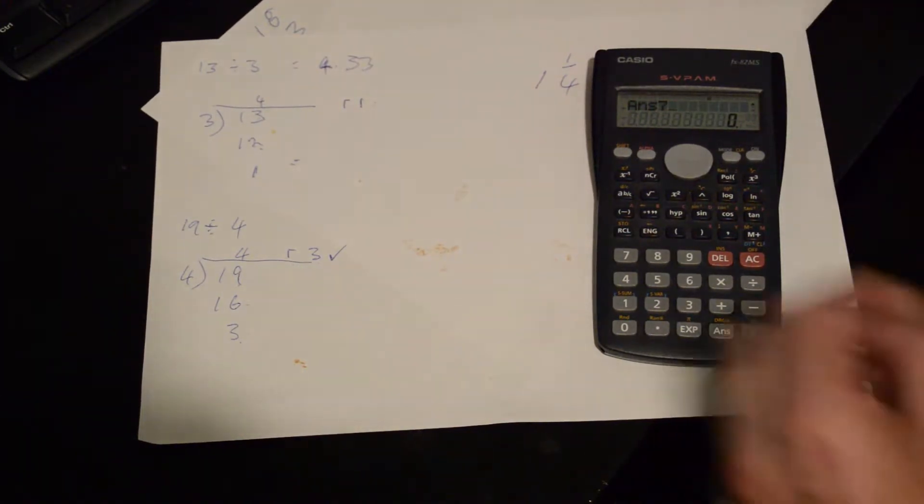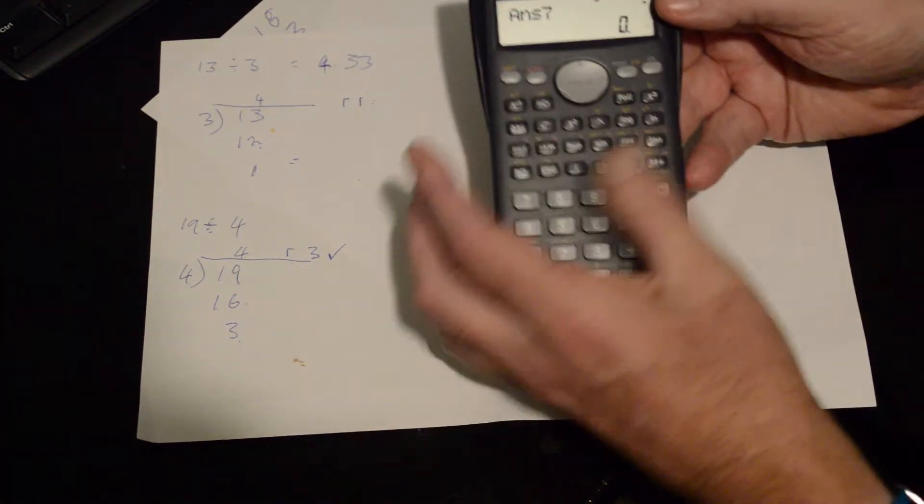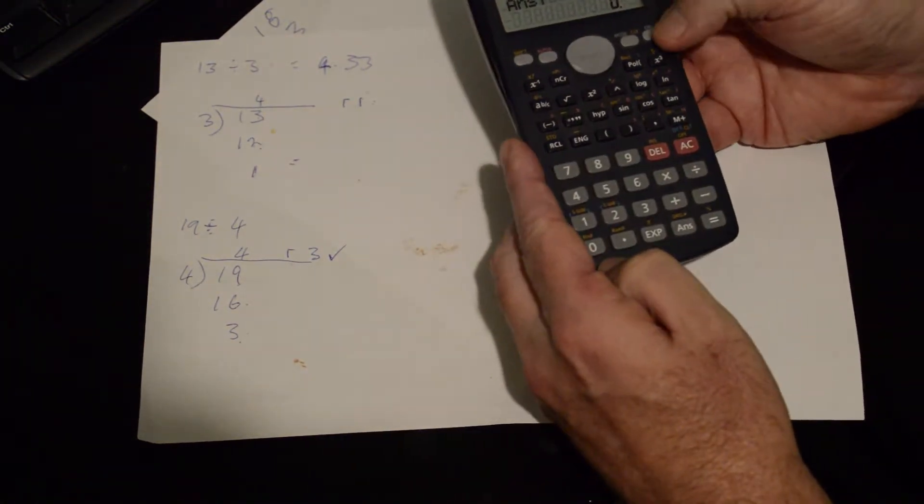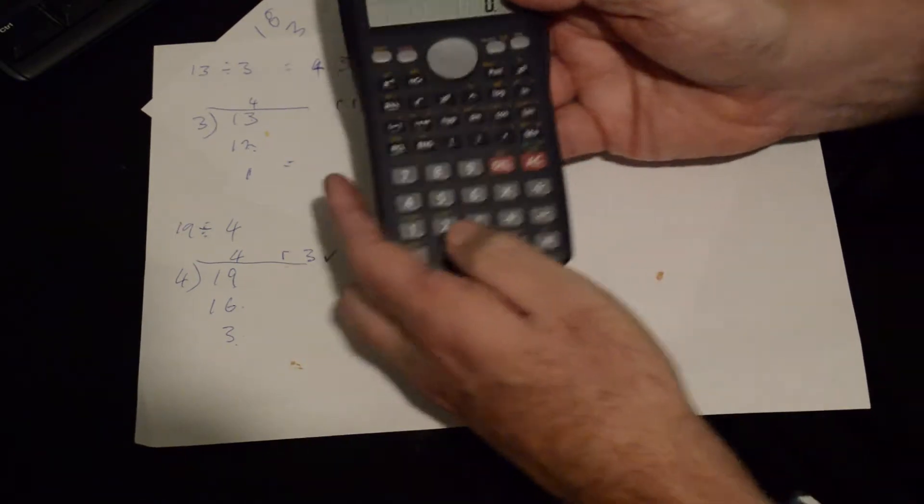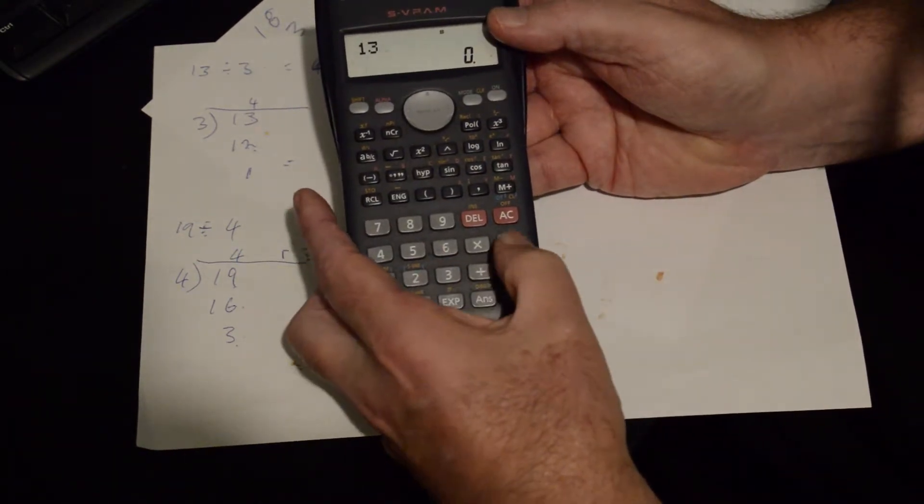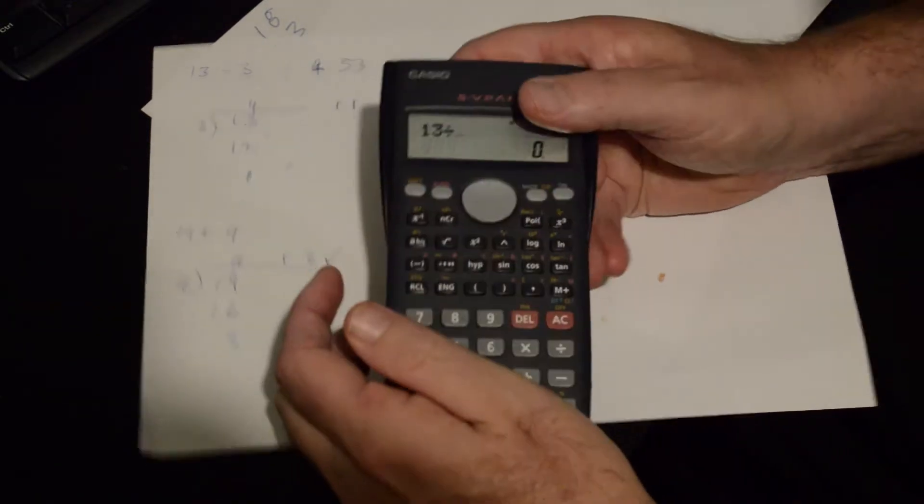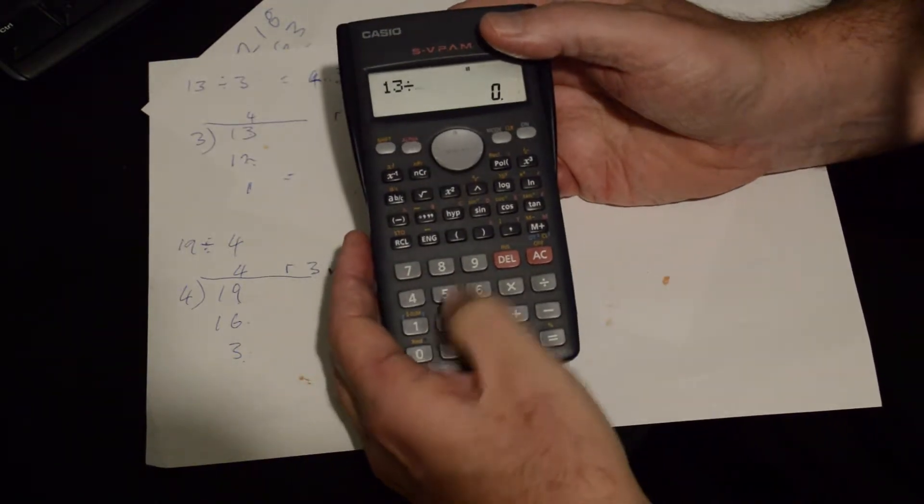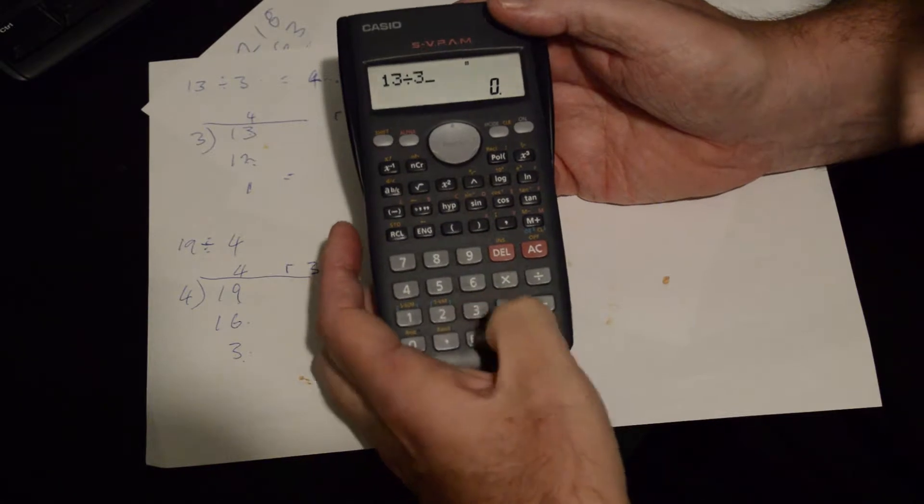So we've got a remainder of 1 there. Now, I'm going to actually do that on the calculator and I'll show you how to do it. What we do is we go 13 divided by 3 equals.